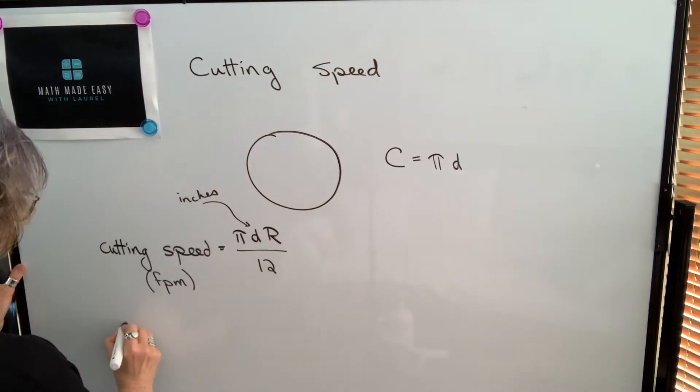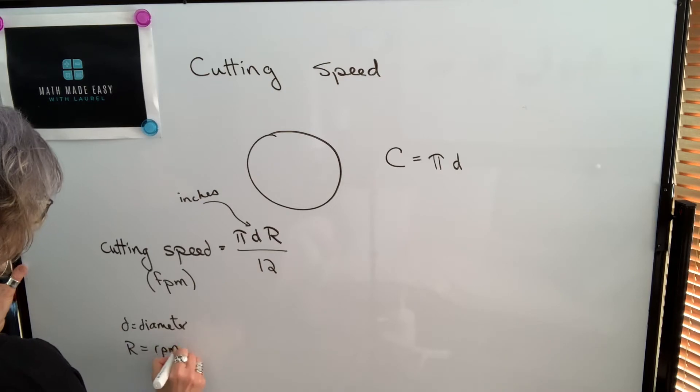So d represents the diameter, and r represents revolutions per minute.